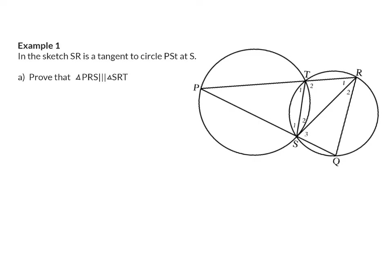In this sketch, SR is a tangent to circle PST, the biggest circle, at S. We need to prove that triangle PRS is similar to triangle SRT.